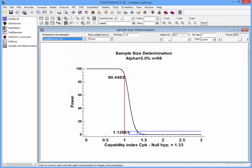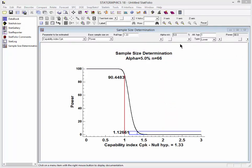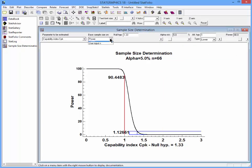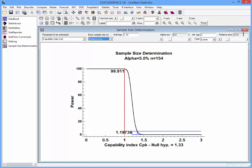I'll select the capability index CPK. Where it says based sample size on, I'll select Relative Error. And at the far right, I'll put in 10, indicating that it should estimate CPK to within plus and minus 10%.